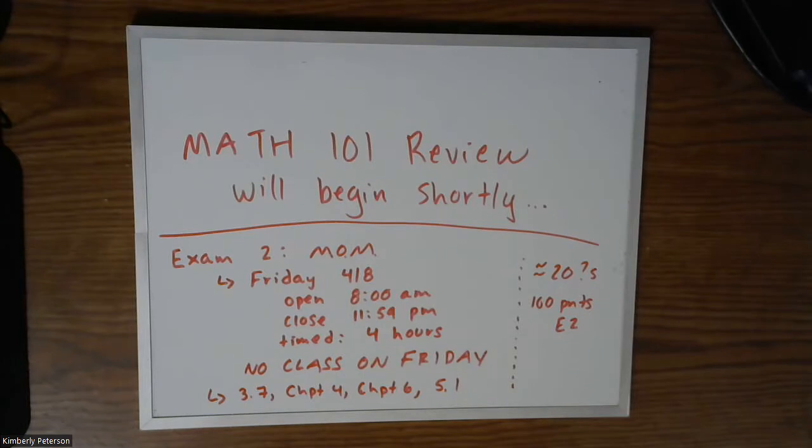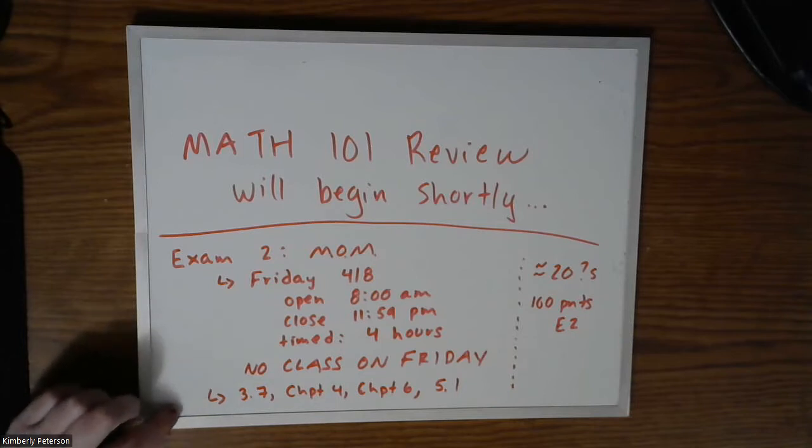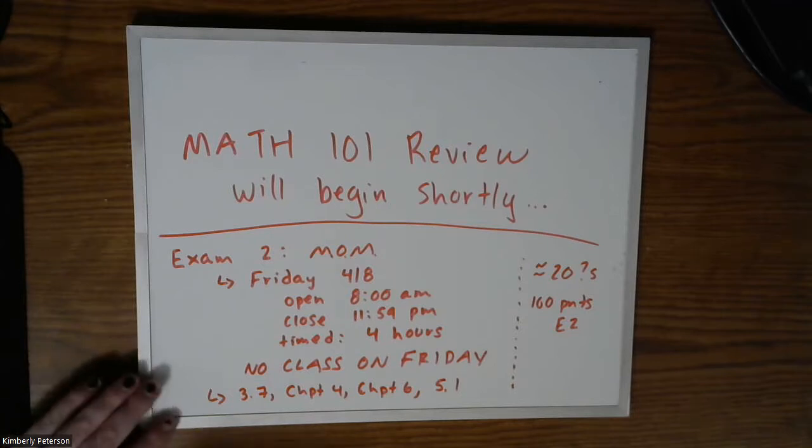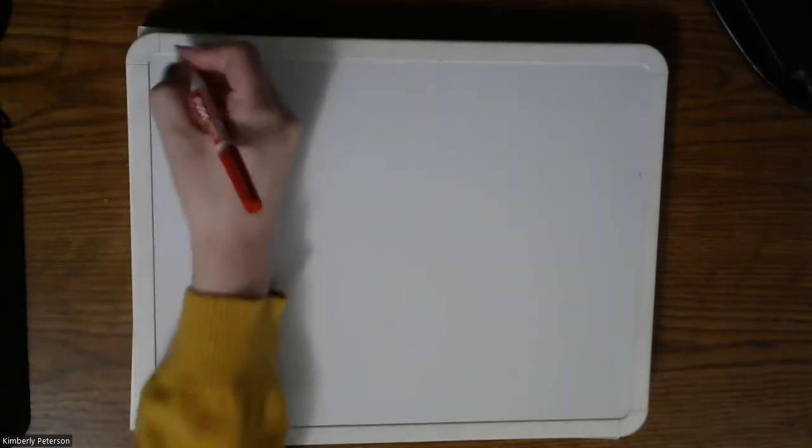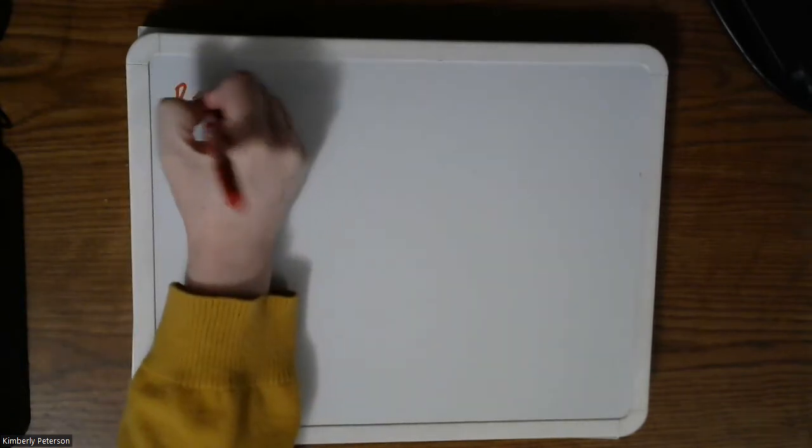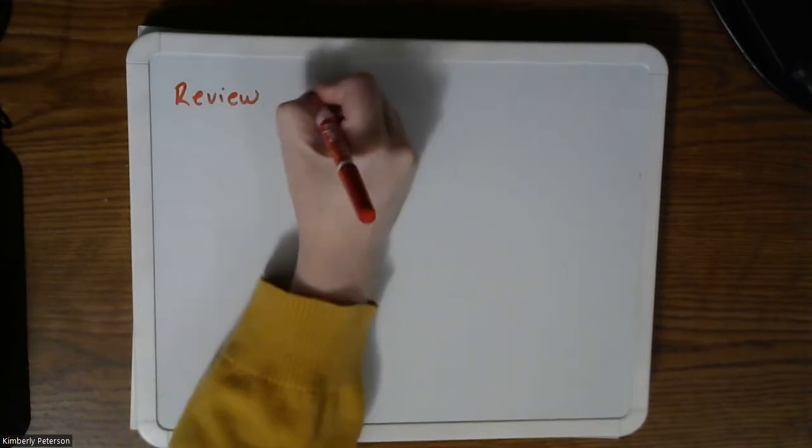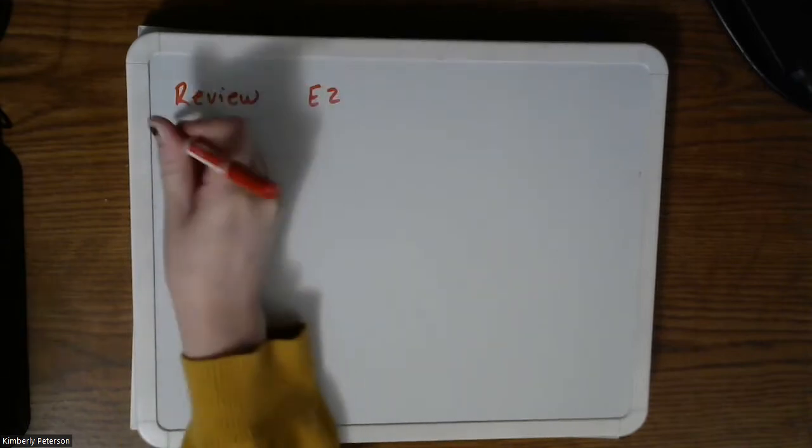So now that we know the logistics, let's go ahead and walk through each of these individual sections, and I will give you some highlights. We can look at a couple of examples. As always, if you have any questions, don't hesitate to stop me either using your mic or the chat, and I can elaborate or clarify any of the formulas. So here is our review for exam two, so I'm just going to shorthand call it E2.